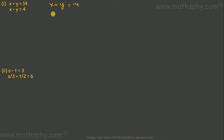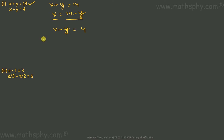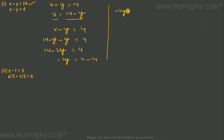X plus Y equals 14 — let's take out X from here: X equals 14 minus Y. I have X equals 14 minus Y, found from the first equation. Now I'll work on the second equation: X minus Y equals 4. I replace X with 14 minus Y, so 14 minus Y minus Y equals 4. That gives 14 minus 2Y equals 4, then negative 2Y equals 4 minus 14, so negative 2Y equals negative 10.